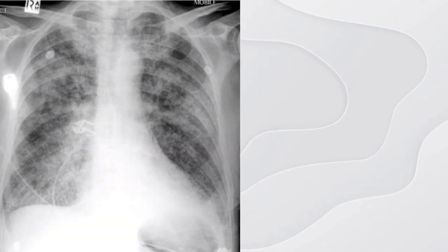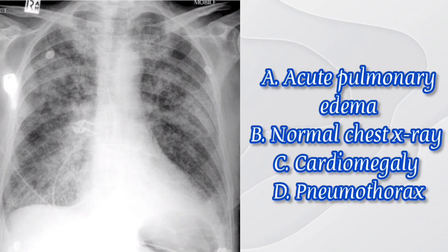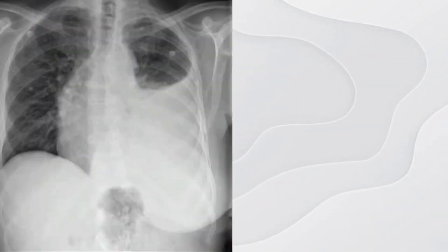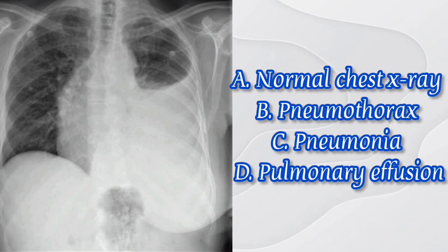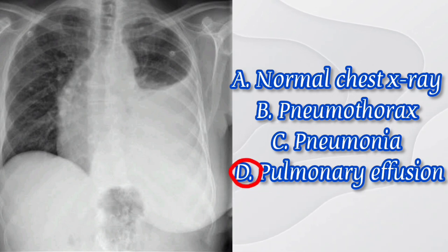Number seven: review the chest X-ray radiograph and select the most appropriate diagnostics. The options are: A) acute pulmonary edema, B) normal chest X-ray, C) cardiomegaly, and D) pneumothorax. The answer here is D) pulmonary effusion.